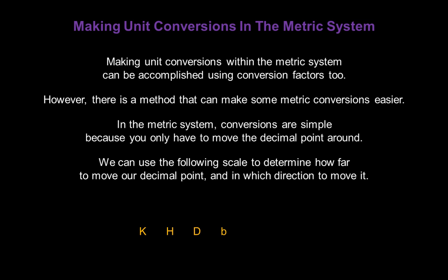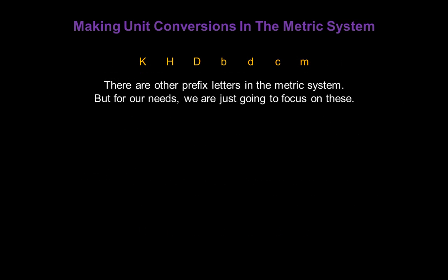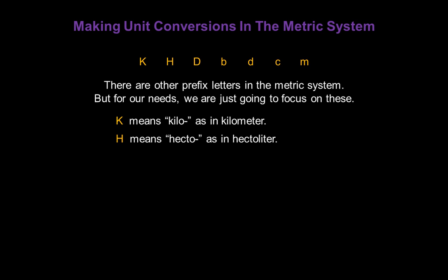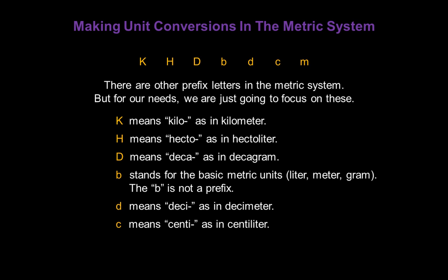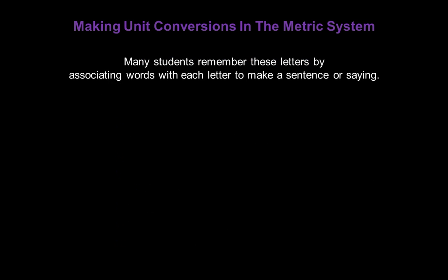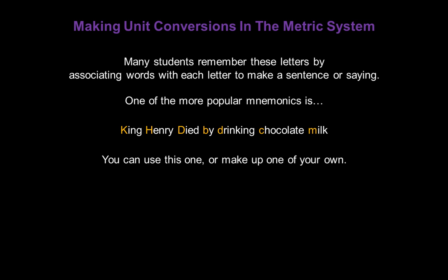The scale is: K, H, D, B, D, C, M. Each letter represents one of the common prefixes in the metric system. K means kilo, as in kilometer. H means hecto, as in hectoliter. D means deca, as in decagram. B stands for the basic metric units — just liters, just meters, or just grams; B is not a prefix. D means deci, as in decimeter. C means centi, as in centiliter. And M means milli, as in milligram. Many students remember these letters by making a sentence — one popular mnemonic is: King Henry died by drinking chocolate milk. You can use this one or make up one of your own.